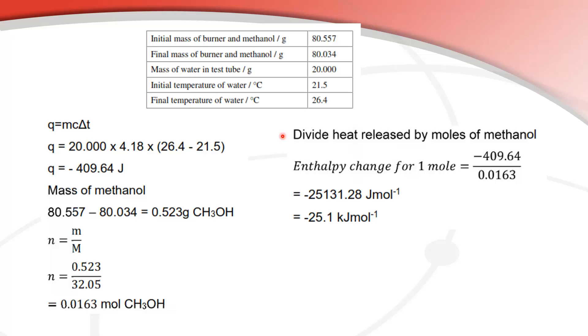Next I'll divide the heat released which we got in this part of the question here by moles of methanol which I've just calculated here. So the enthalpy change for one mole is negative 409.64 divided by 0.0163 and that gives us negative 25,131.28 joules per mole.